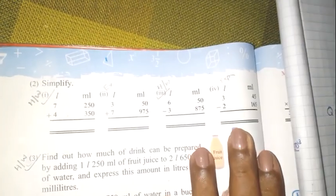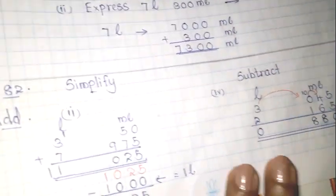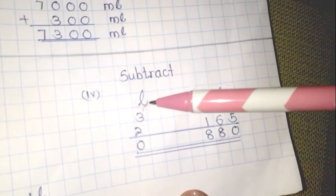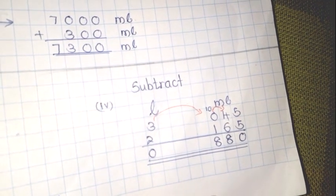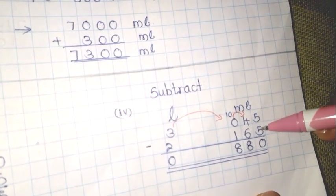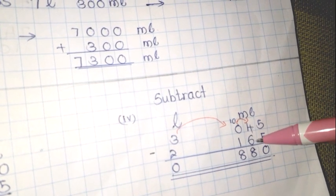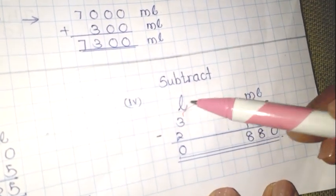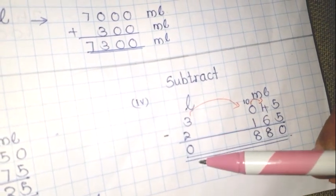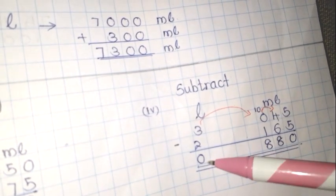Question number 7, sub-question 4 — subtraction. They have given 3 litres 145 millilitres, and you write the subtraction sign. 5 minus 5 is 0. In the tens column you can't subtract, so you borrow: 14 minus 6 is 8. The remaining digit becomes 9, and 9 minus 1 is 8. Then 2 minus 2 is 0. The answer is 880 millilitres — there will be no litres.